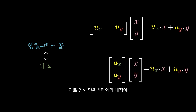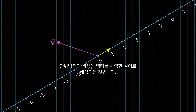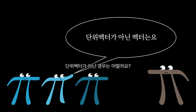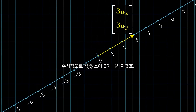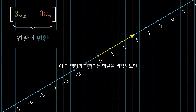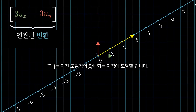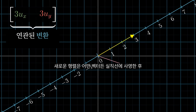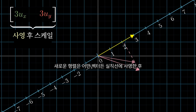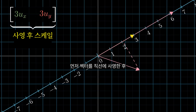This is why taking the dot product with a unit vector can be interpreted as projecting a vector onto the span of that unit vector and taking the length. So what about non-unit vectors? For example, let's say we take that unit vector u-hat but scale it up by a factor of 3 — each of its components gets multiplied by 3. Looking at the matrix associated with that vector, it takes i-hat and j-hat to 3 times the values where they landed before. Since this is all linear, the new matrix can be interpreted as projecting any vector onto the number line copy and multiplying where it lands by 3. This is why the dot product with a non-unit vector can be interpreted as first projecting onto that vector, then scaling up the length of that projection by the length of the vector.